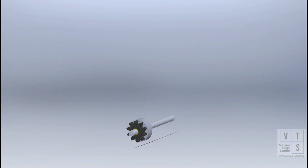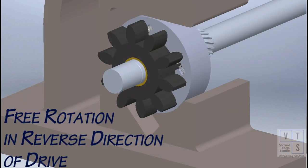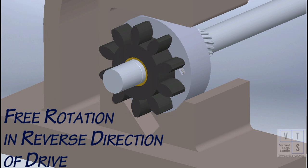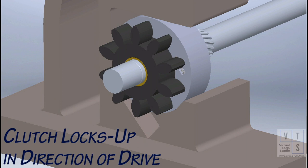Hold the outer race of overrunning clutch and rotate the pinion in reverse direction of drive. The pinion should rotate smoothly in reverse direction. Now, when pinion is rotated in the direction of drive, it should lock up.